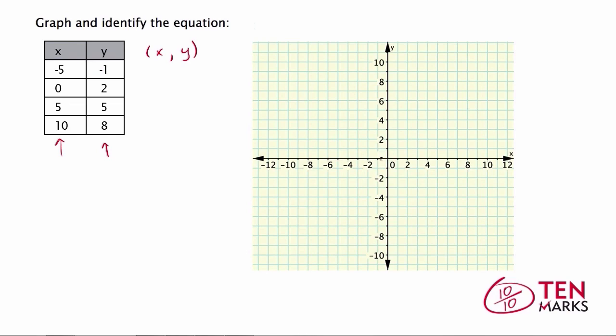The x value is on the horizontal axis, so go five places to the left from the origin because it's negative: 1, 2, 3, 4, 5. There's negative 5. Now go down 1 because you have negative 1 as the y value. There's your first point. Now go to the point (0, 2). So when x equals 0, y equals 2. x equals 0 is the y-axis, and y equals 2 is right there.